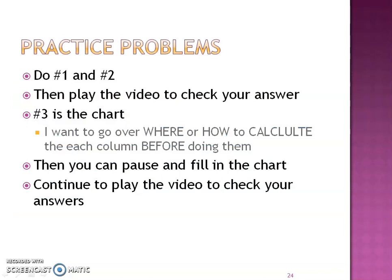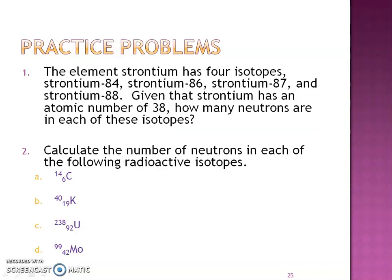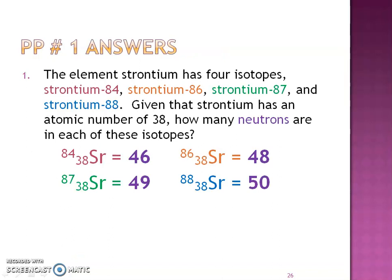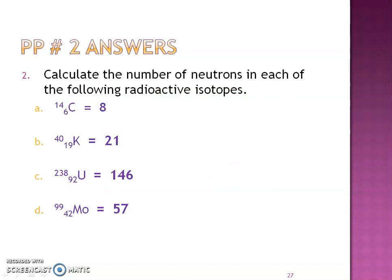For your practice problems, you should be able to do numbers one and two right now on your own. Pause the video, do numbers one and two, then play the video to check your answers. For number three, we'll first go over where to locate the information and how to calculate each column, do the first row of that chart together, and then you can finish up and check your answers. Hopefully you got the correct answers for one and two. If not, make a note in the margins to ask about it next class. For number two, if it's asking for the number of neutrons, take the mass number minus the atomic number.